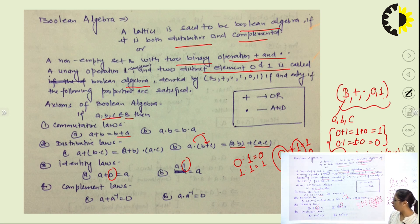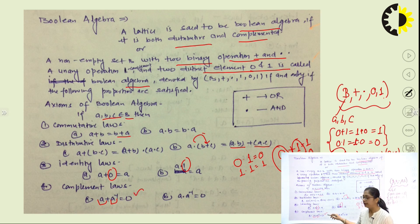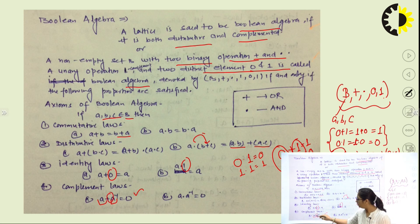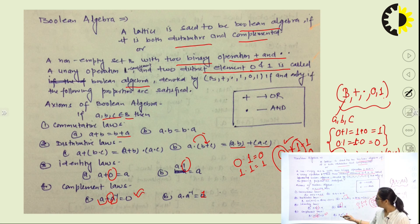Next is the complement element law. The complement law says that an element combined with its complement gives you the identity. In case of addition the identity element is 0, so a plus a-inverse gives identity. In case of multiplication the identity element is 1, so a dot a-inverse always gives you 1.